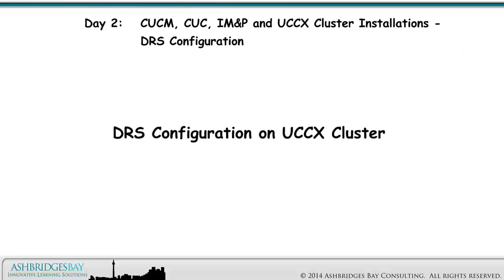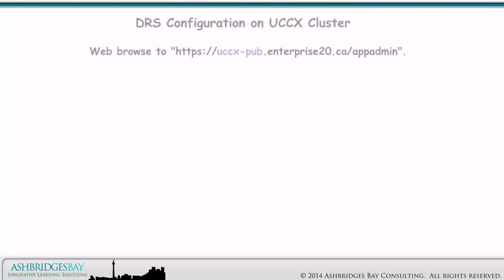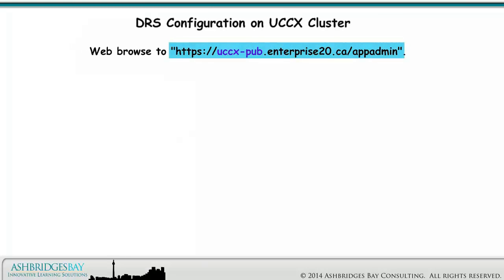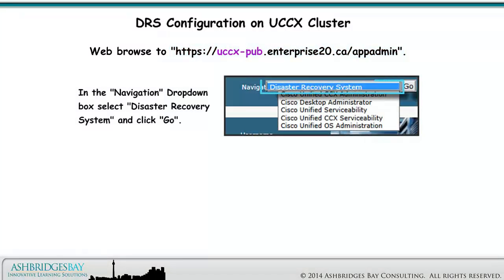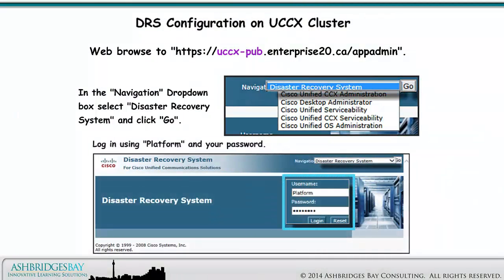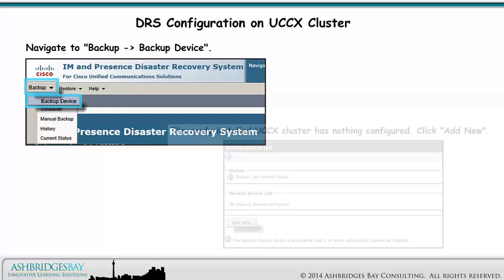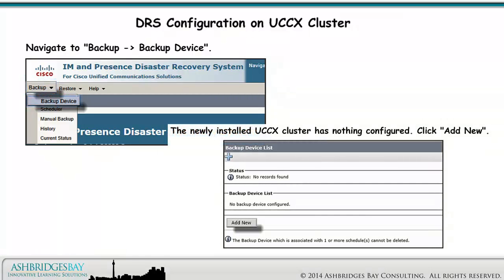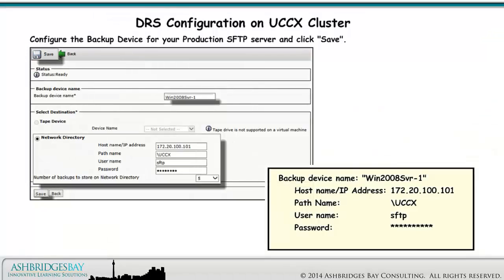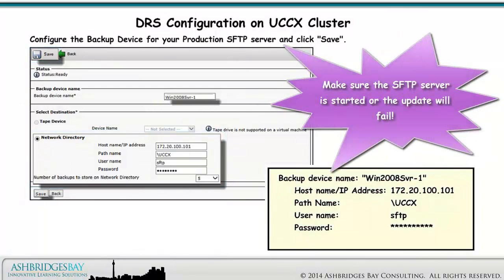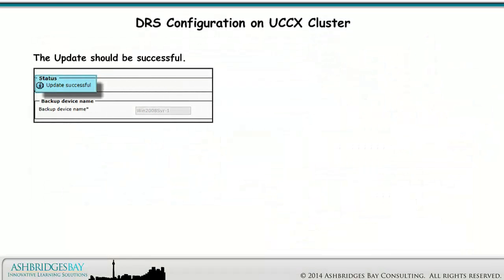We'll finish with the UCCX cluster. Web browse to this address. In the navigation drop-down box, select Disaster Recovery System and click Go. Log in using platform and your password. Navigate to Backup > Backup Device. The newly installed UCCX cluster has nothing configured. Click Add New. Configure the backup device for your production SFTP server and click Save. Make sure the SFTP server is started or the update will fail.